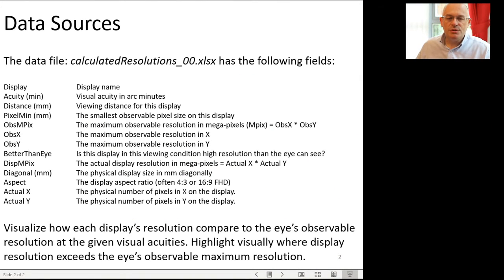The file is calculated resolutions. It's got a whole bunch of characteristics about displays and calculations about them which you can visualize. I'm interested in you showing which things in the visualization are important, particularly where displays exceed the visual acuity of the eye.